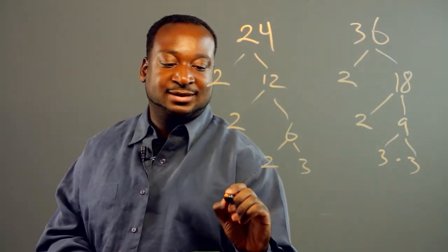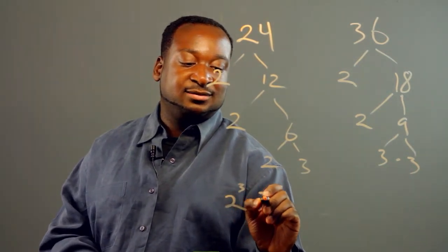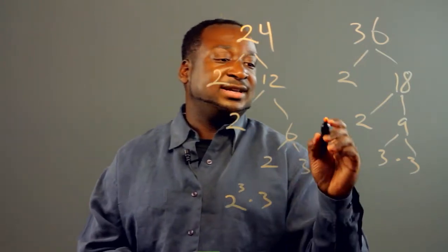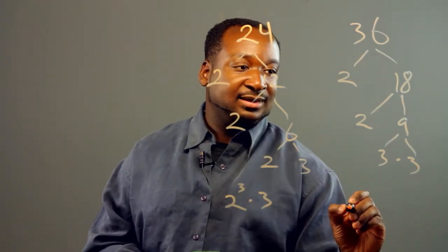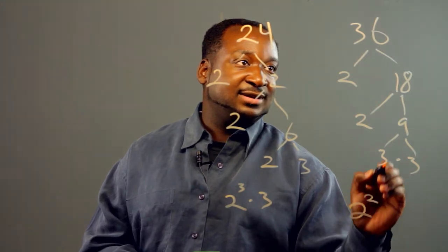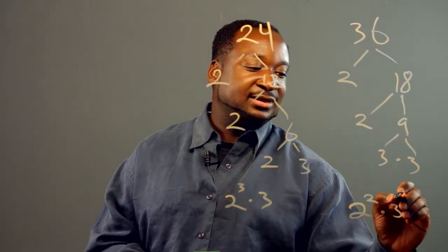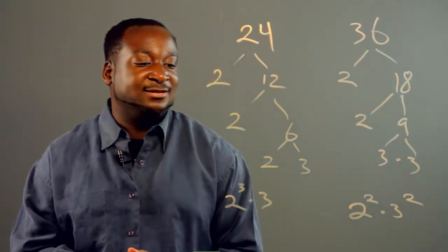So, that comes out to, over here, 2 cubed times 3, and over here, you get 2 squared times 3 squared, okay?